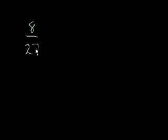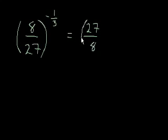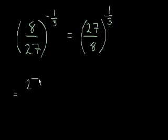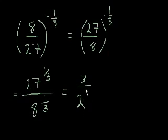Let's try 8 over 27 to the negative 1 third. Immediately when we see that negative, we flip it — so that equals 27 over 8 to the 1 third. That equals 27 to the 1 third over 8 to the 1 third. We know 27 to the 1 third equals 3, and 8 to the 1 third equals 2. So we get 3 halves. 8 over 27 to the negative 1 third is 3 halves. This first problem probably looked very intimidating, but it only took two steps to get there.